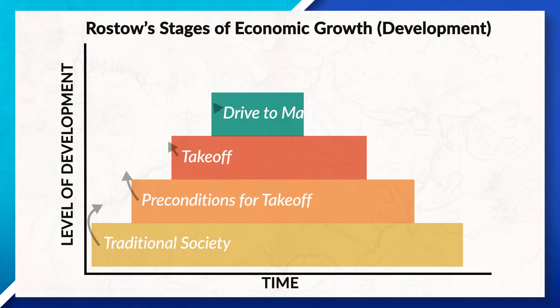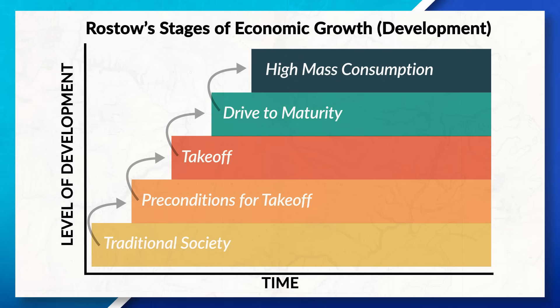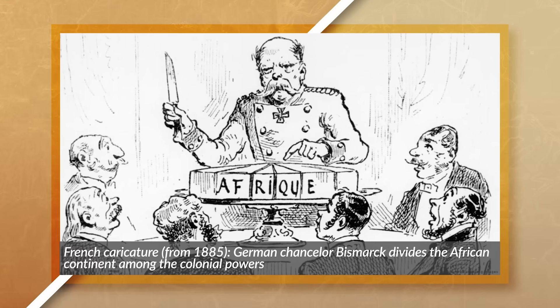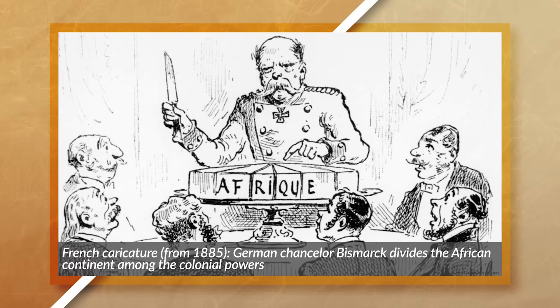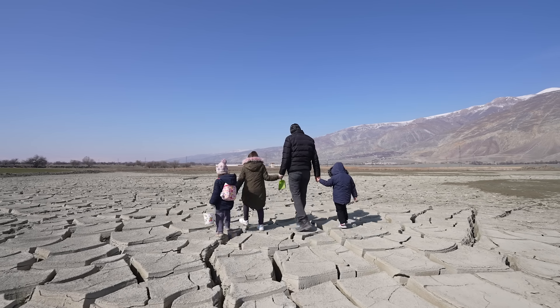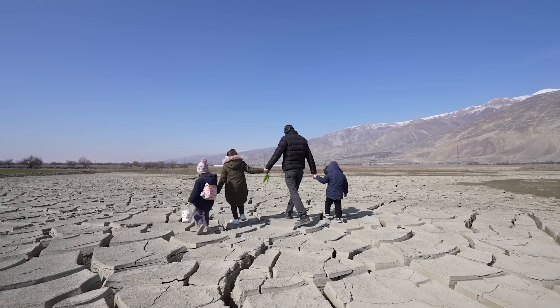By understanding Rostow's model, we can gain insight into how countries' economies develop and change over time. However, it is important to note that this model has been criticized for not accounting for outside political and social factors — for example, the impact that colonialism had on states and their development. It also doesn't take into account environmental limitations on a country, such as carrying capacity and limited resources.